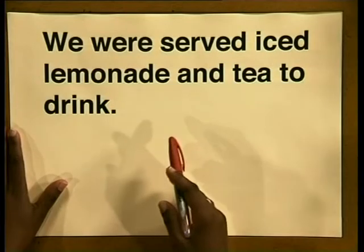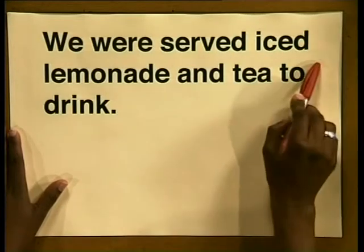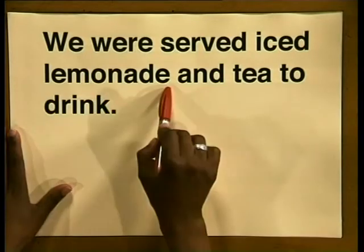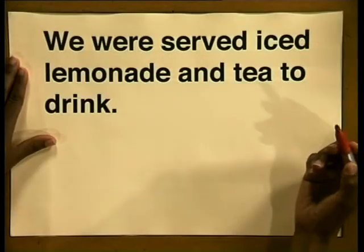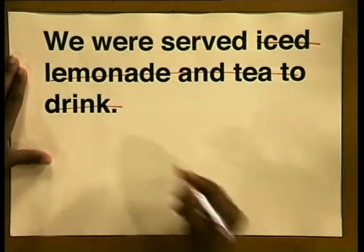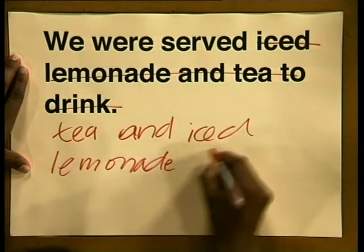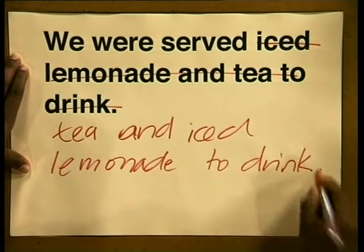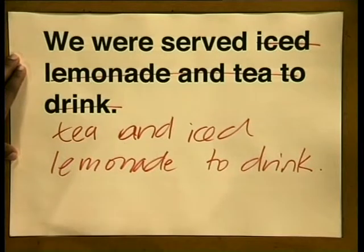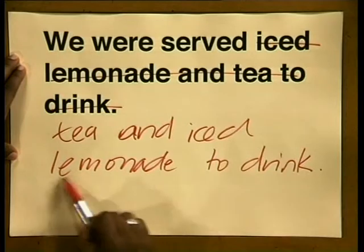Here's another example of ambiguous word order where we're unsure which word or words the adjective applies to. 'We were served iced lemonade and tea to drink.' The problem here is the word 'iced'. You cannot be sure whether it applies just to the lemonade or to the lemonade and tea. This sentence is ambiguous because we don't know what kind of tea is being served — you can get hot tea, but you can also get iced tea. We can fix this by changing the word order: 'We were served tea and iced lemonade to drink.' By swapping the order around, it is quite clear that the adjective 'iced' now only applies to the lemonade and not to the tea.